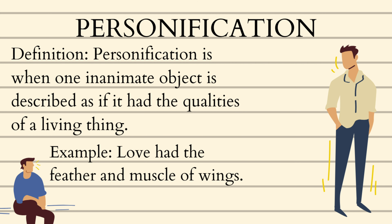The third type of literary device is personification. It is very famous. It is when one inanimate object is described as if it had the qualities of a living thing. So 'love had the feather and muscle of wings' — love obviously doesn't have any muscle or feather, but you're describing it using qualities of a living thing because love is not a living thing. A simpler example: 'The exam paper smiled at me as I looked at it.'